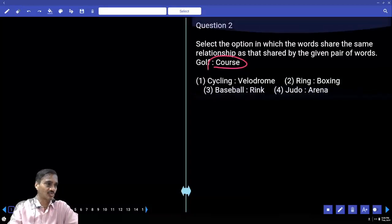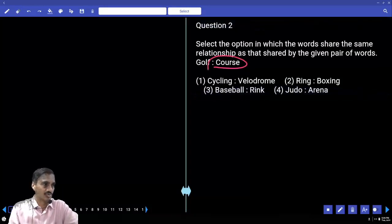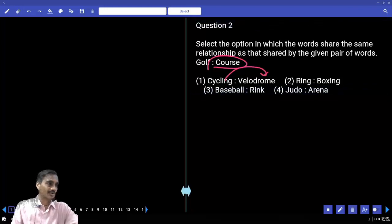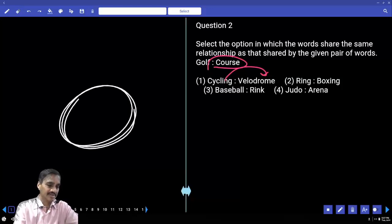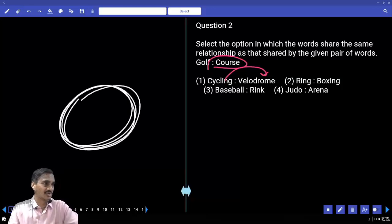Question number two: golf and the place where golf is played is called a golf course. Cycling and velodrome - the place where indoor cycling is done is called a velodrome.